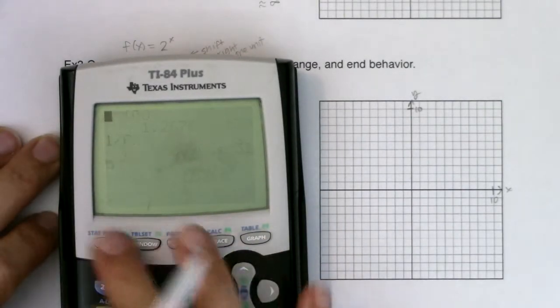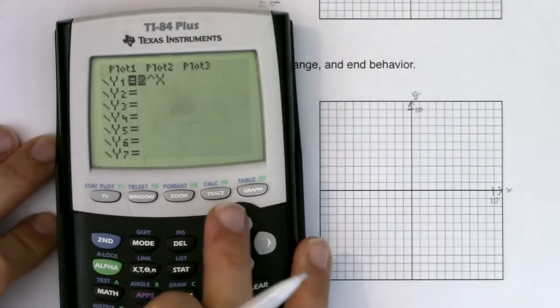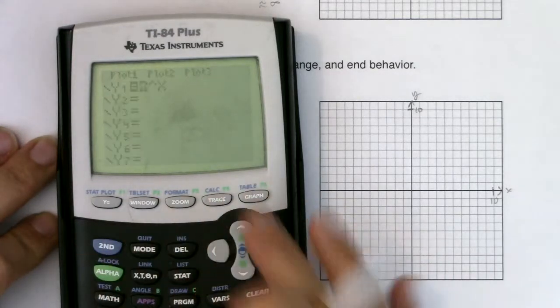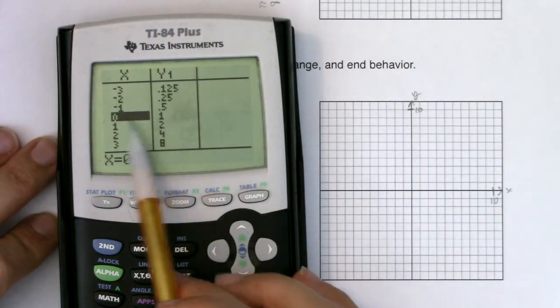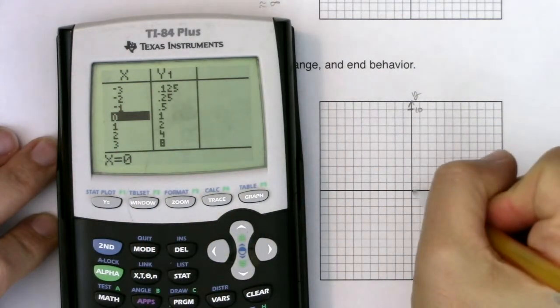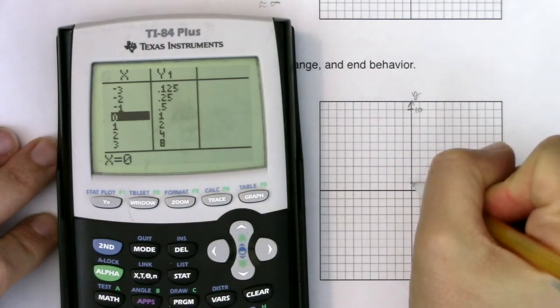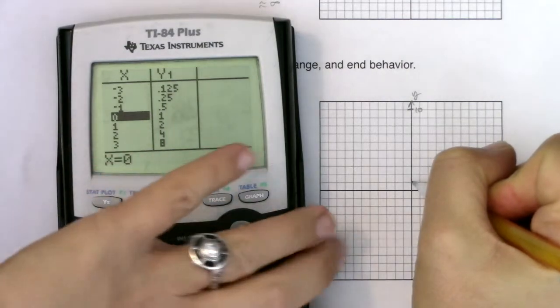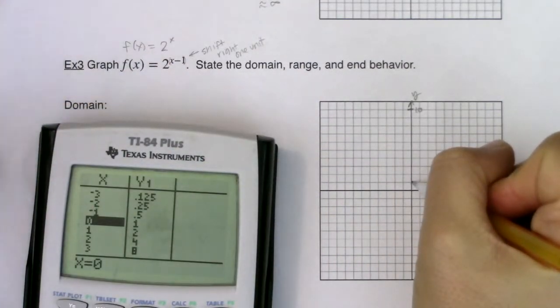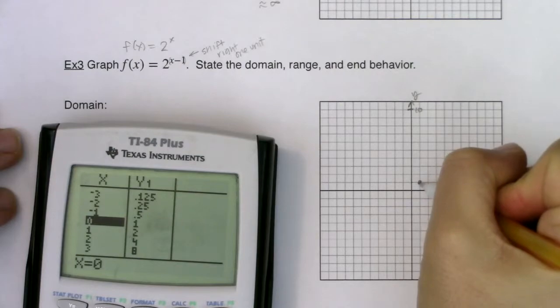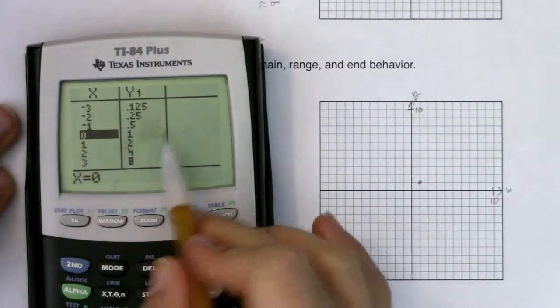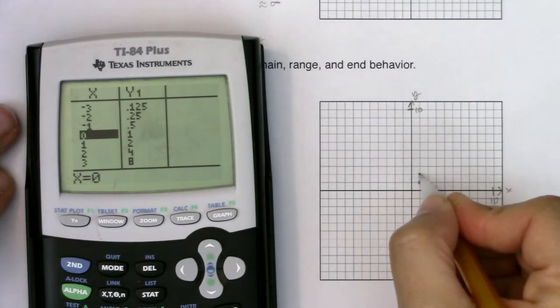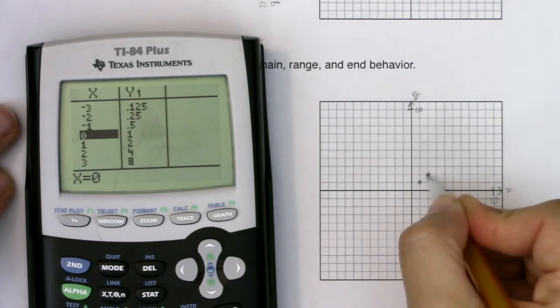If you remember from example 2, we had 2^x. Let me go to my table. I want to take this point here (0, 1). If I was at (0, 1) for my 2^x function and now I would like to graph 2^(x-1), I will shift it right one unit. If I had the ordered pair (1, 2), I want to shift it right one unit.